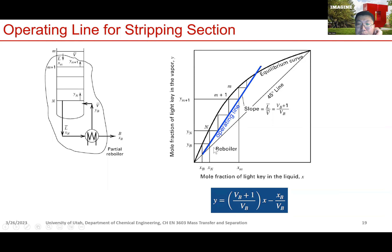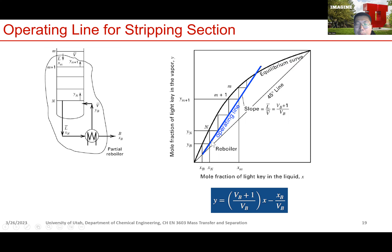So the stripping section operating line slope ranges from 1 to infinity, meaning it goes from overlapping the 45-degree line to being vertical. We'll stop here and continue to talk about the Q line.